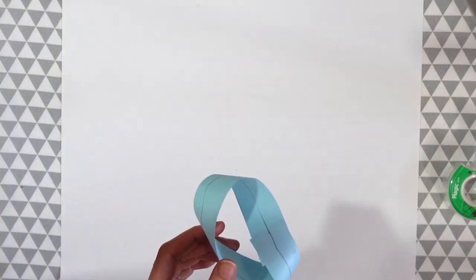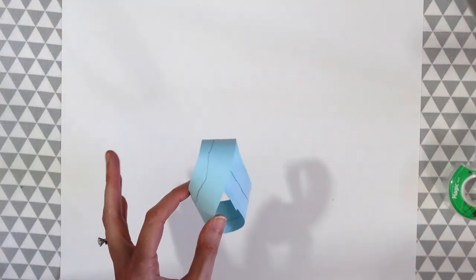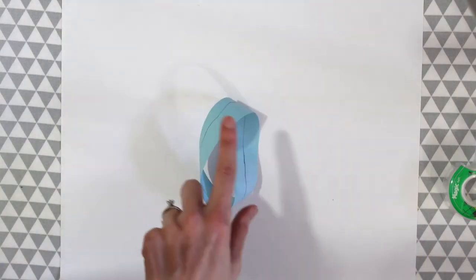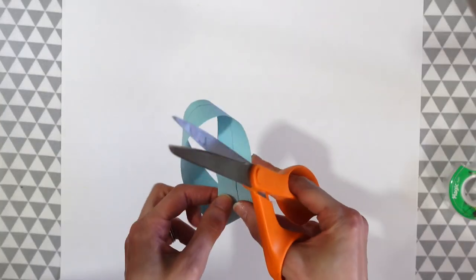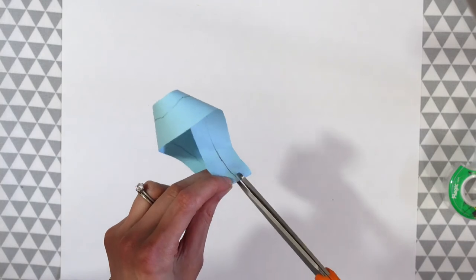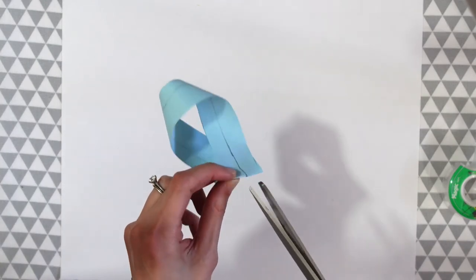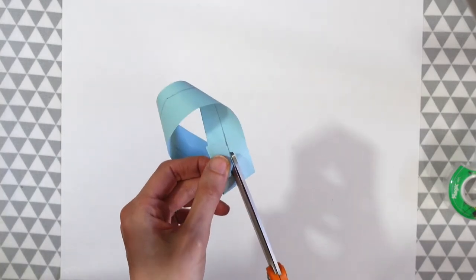So let's try more experiments. What do you think would happen if we cut along this entire line that we just made? So let's find out. So again we could start at any point. So I'm just going to start right here and cut all the way around.